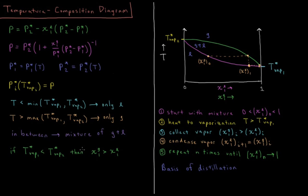Because of the varying vapor pressures of the two liquids, they have different boiling points. Because of those different boiling points, there is a different equilibrium mole fraction of component 1 in the vapor and in the liquid. And because of this, we can repeatedly evaporate part of the solution, collect the vapor, condense it, evaporate it again, and repeat until we have isolated the more volatile component using the procedure called distillation.